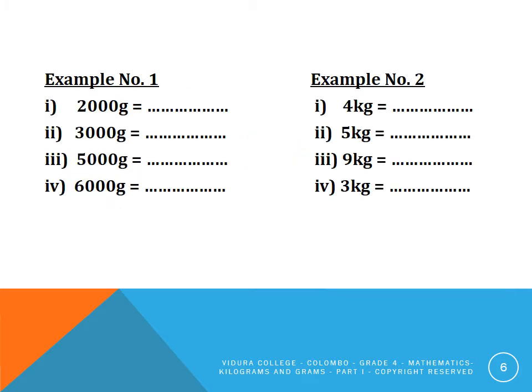Here are the examples. Look at example number one. It is two thousand grams. Can you remember how we convert grams into kilograms? If we convert two thousand grams into kilograms, it should be two kilograms. In the same way: three thousand grams equals three kilograms; five thousand grams equals five kilograms; six thousand grams equals six kilograms.